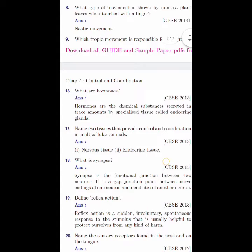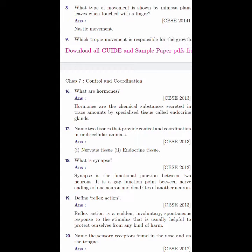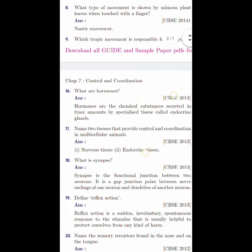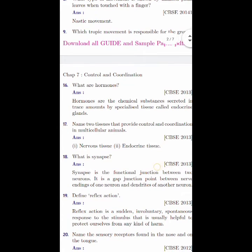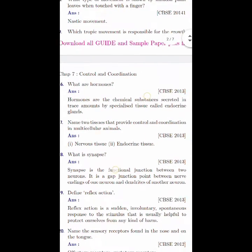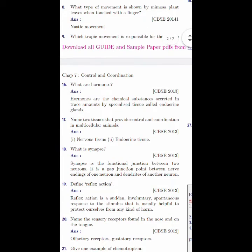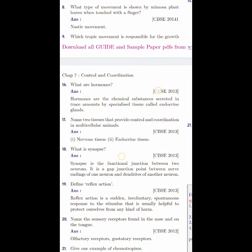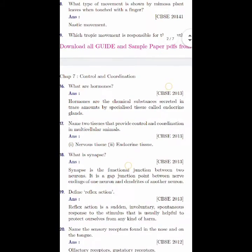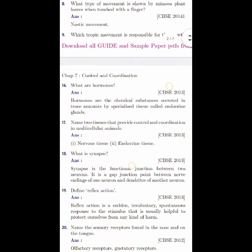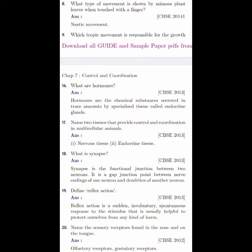Coming to the 16th question, what are hormones? Hormones are the chemical substances that are secreted in trace amounts by specialized tissues called endocrine glands. Name two tissues that provide control and coordination in multicellular animals. That is nervous tissue and endocrine tissue.